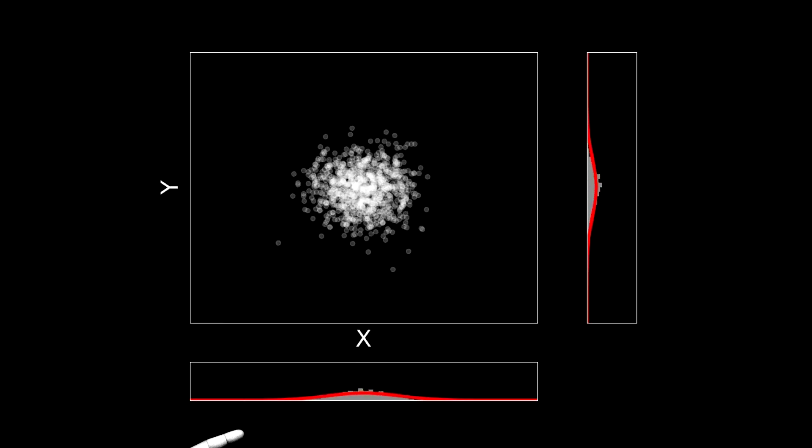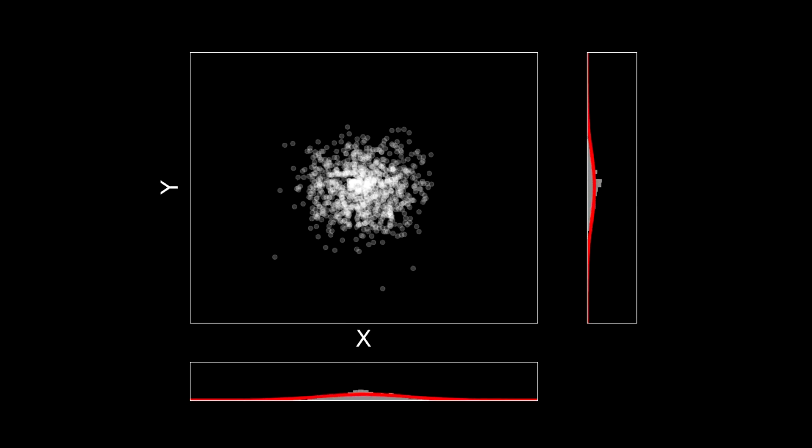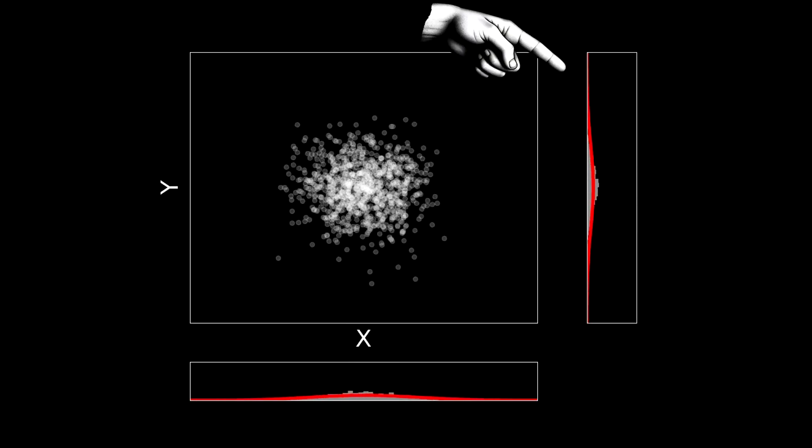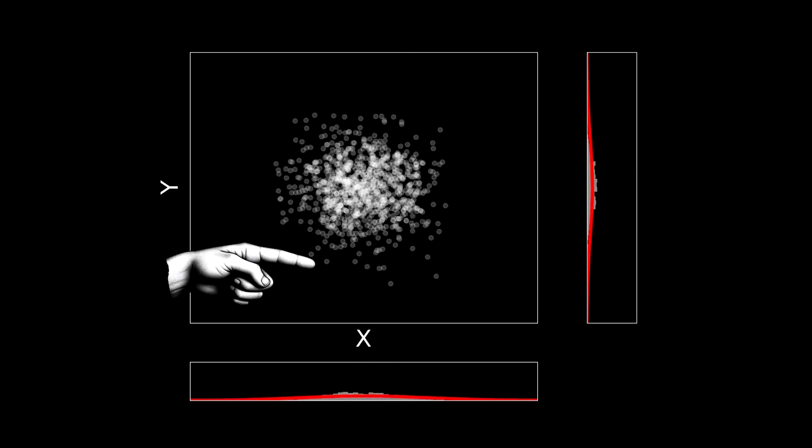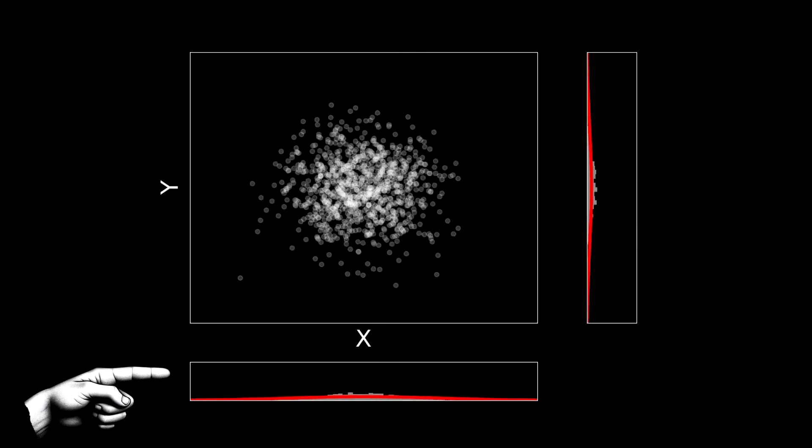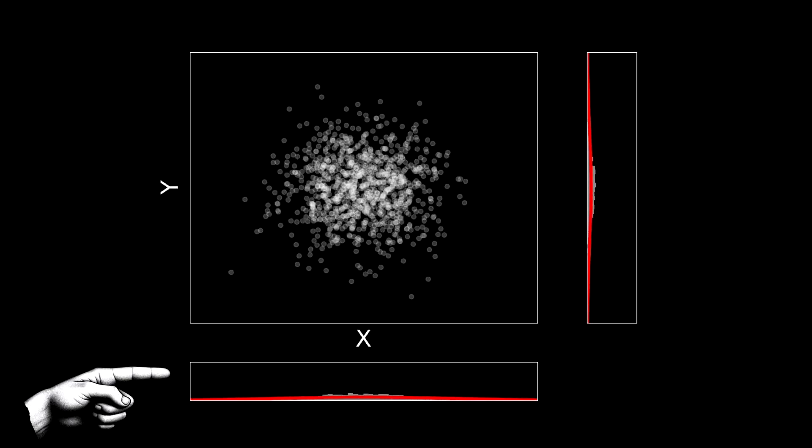As time goes by, they tend to diffuse in every direction. If we look at the histogram of positions at any time, in x or in y, we get the Gaussian distribution, with a width that is bigger as time goes by.